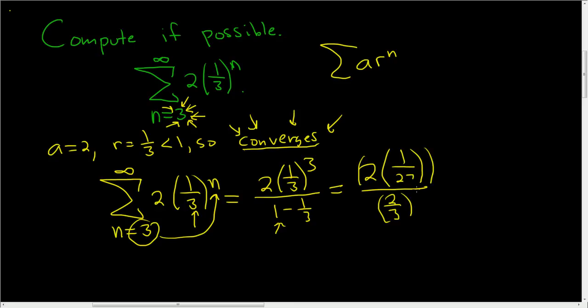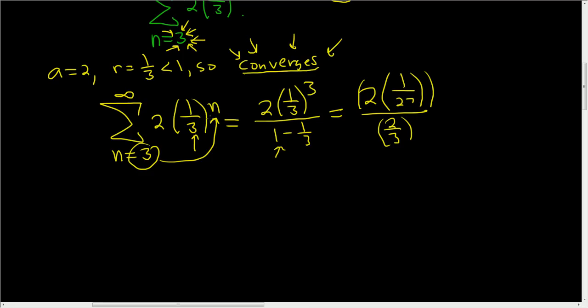I don't know why I put those extra parentheses there. It looks really weird. So this is 2 over 27 divided by 2 over 3. So it's 2 over 27 times the reciprocal of this, so 3 over 2.